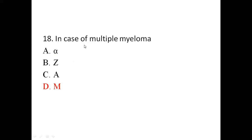Eighteenth question: in case of multiple myeloma, which immunoglobulin is elevated? Options are alpha, Z, A, and M. In multiple myeloma, immunoglobulin M levels are elevated. The right answer is option D, M.